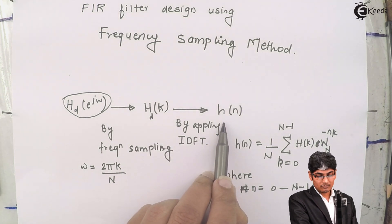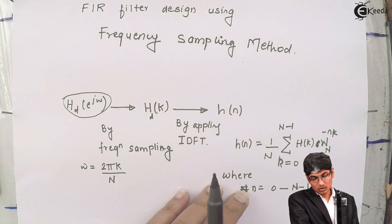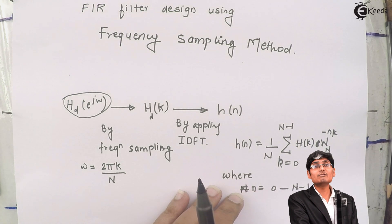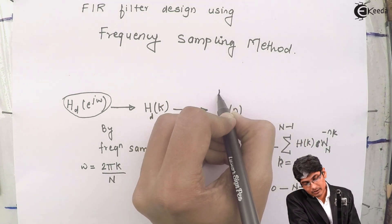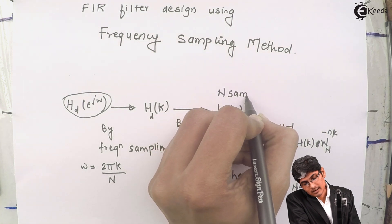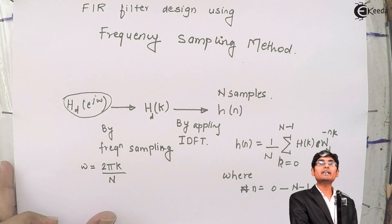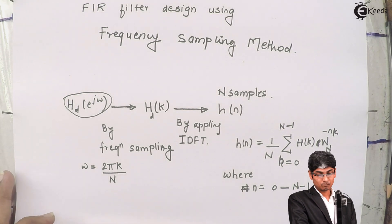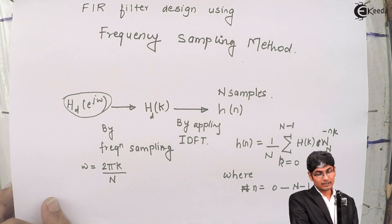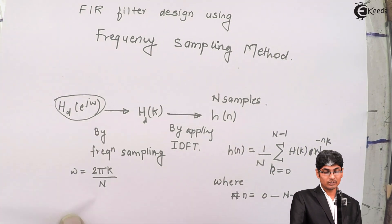h of n will have a total number of N samples. Since N is always a finite number, h of n will be a finite impulse response filter. Let us see step by step how to go from the input to the output using this method.